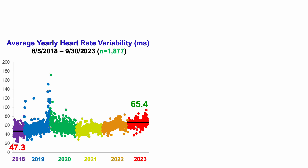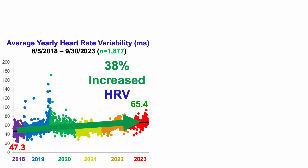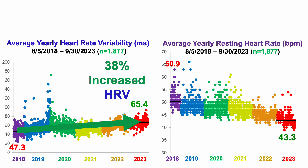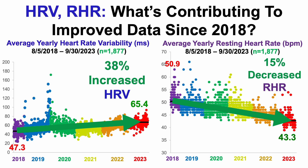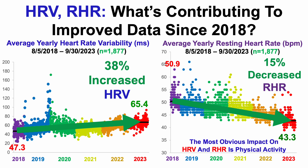In the last video, we saw that heart rate variability is increased by 38% since 2018, while reducing the resting heart rate by 15% over that same time span.